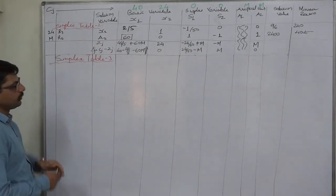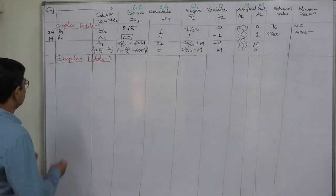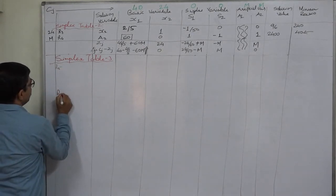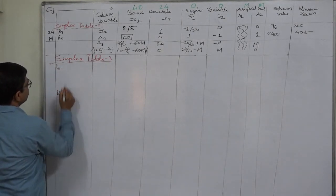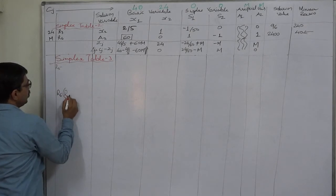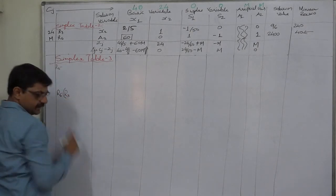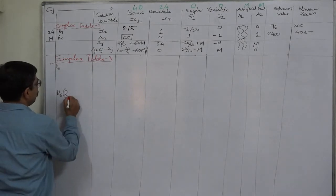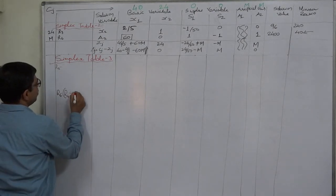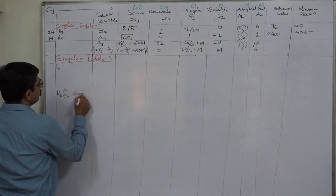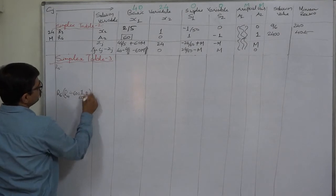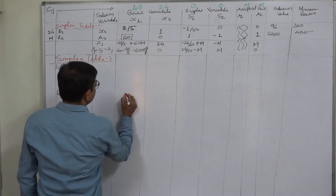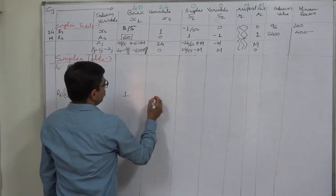Since R4, the second row, is the key row, we have to prepare the second row of the new table first — that will be R6. The formula is simple: old key row divided by key element. Old key row is R4 divided by key element 60, so 1/60th of R4 gives R6. 60 divided by 60 is 1.